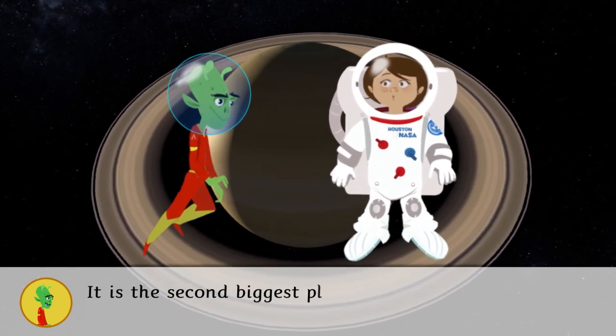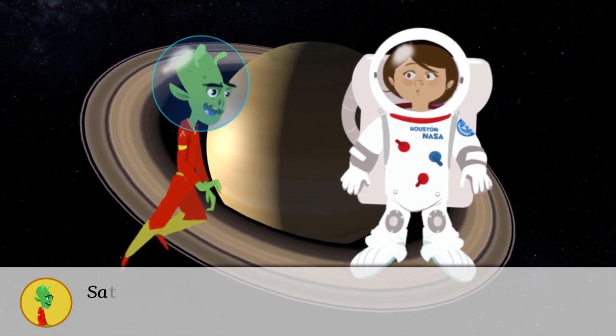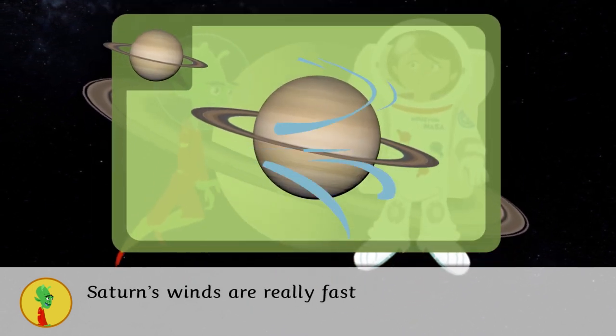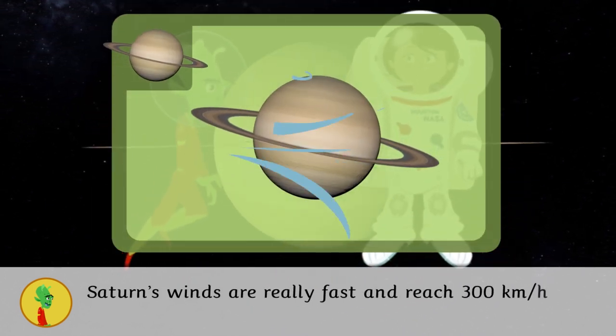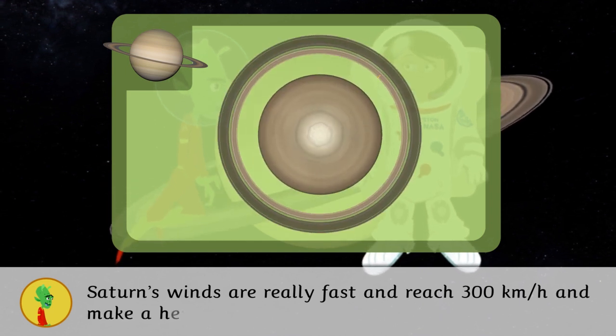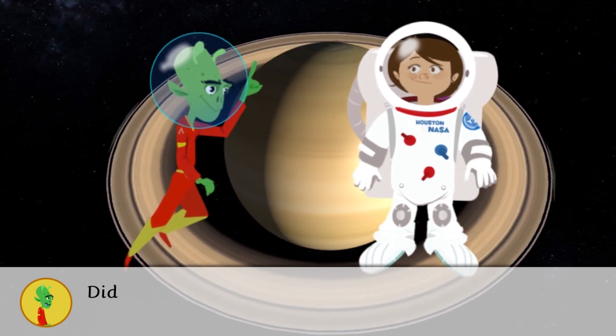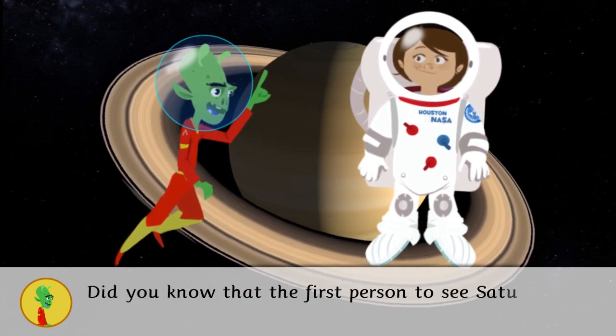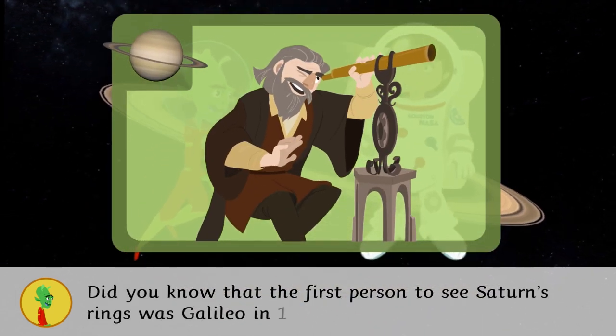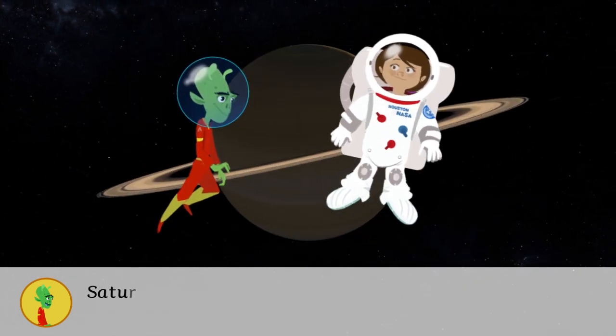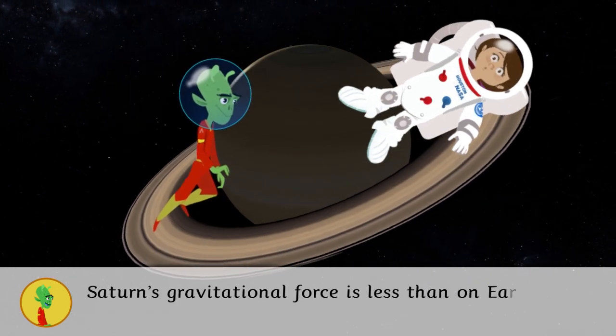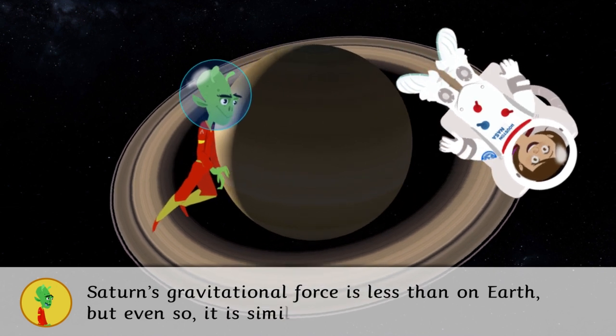It is the second biggest planet after Jupiter. Saturn's winds are really fast and reach 300 kilometers per hour and make a hexagon in its North Pole. Did you know that the first person to see Saturn's rings was Galileo in 1610? Saturn's gravitational force is less than on Earth, but even so, it's similar.